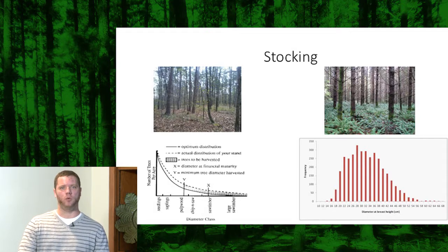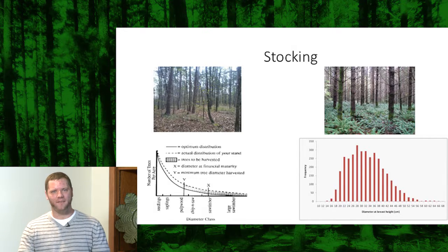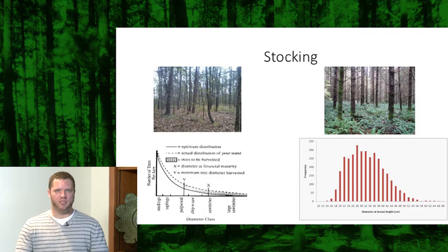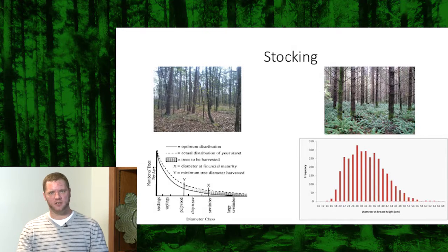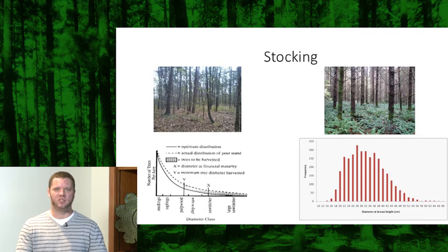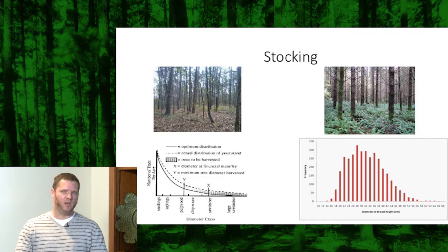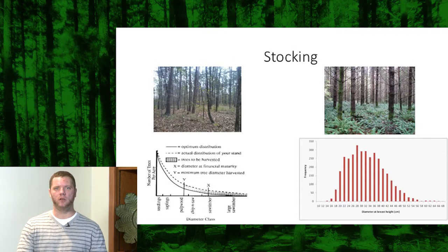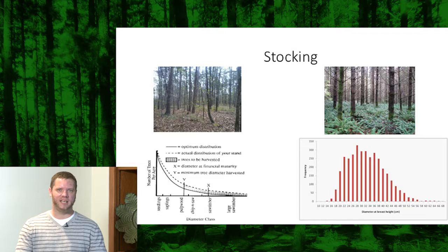The reason for that bell shape is because we've established all the trees at the same time and they're about the same size and species, so they typically grow at the same rate. Some will always grow better than others, which is why you get that tail on the right end of the distribution, but by and large they all grow at about the same rate. If we jump to the graph on the bottom left, that's an example of the diameter distribution of an uneven age stand - instead of a unimodal bell-shaped curve, you have a negative exponential function where you have more small trees and at a consistent rate you drop down and have fewer large trees.